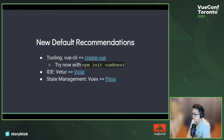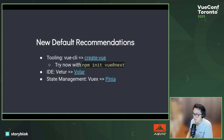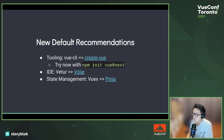To sum up, when you create a brand new project with Vue 3, the new default recommendations are: first, we're switching from Vue CLI to create-vue — you can try it now with npm init vue@next. For the IDE extension, we recommend switching from Vetur to Volar — the two don't play well together so if you switch to Volar, you need to disable Vetur. And for state management, we recommend Pinia as the new default.